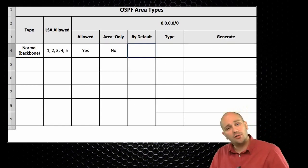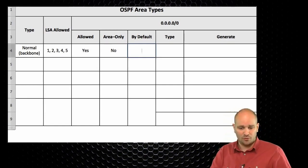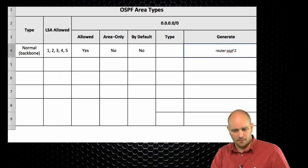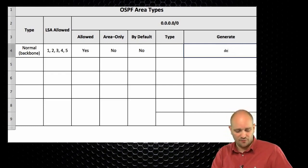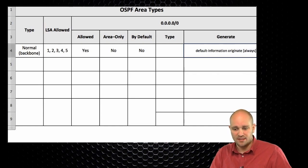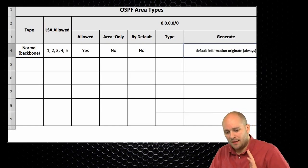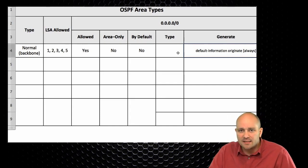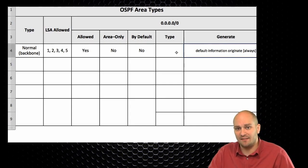When you create a normal area or backbone area, the default route is not generated by default. You can create one using the 'default information originate' command, optionally with the 'always' keyword. What 'default information originate' does is it implicitly redistributes an existing default route.